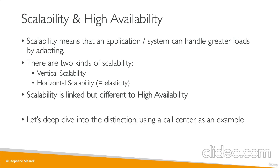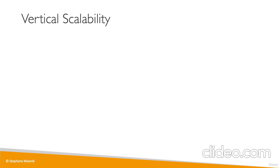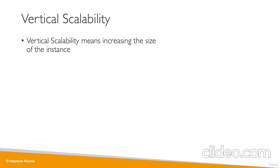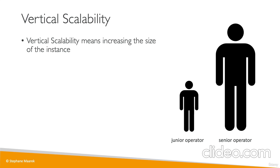We'll be using a call center as an example. Vertical scalability in AWS means you can increase the size of the instance. For our call center, say we have a junior operator — if we upgrade that operator, we get a senior operator who can handle a lot more calls because they're more experienced. That's what vertical scalability looks like.